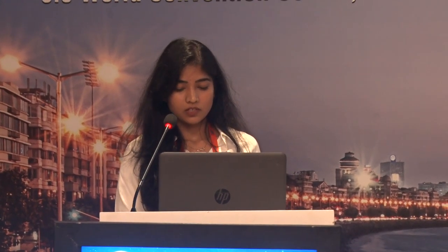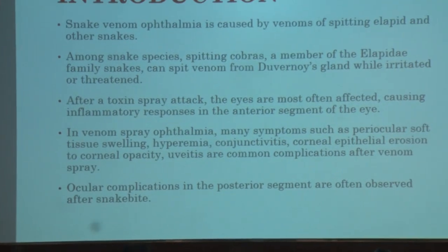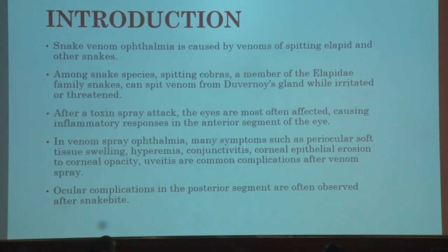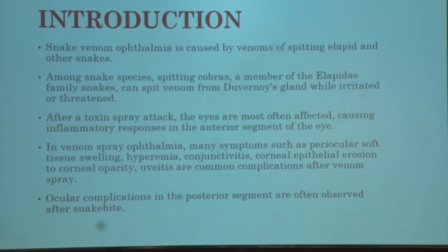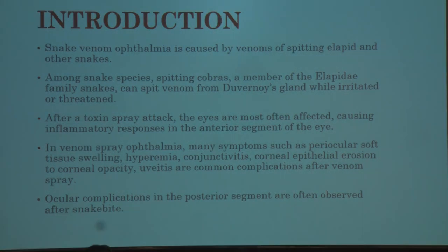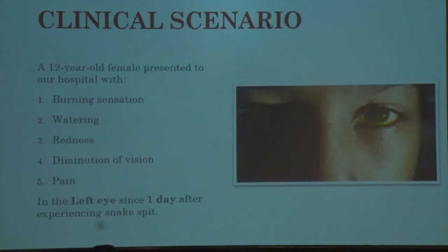Dr. Jagrati Khudania presented a case of snake venom ophthalmic uveitis. Snake venom ophthalmia is caused by venoms of spitting cobras and other elapid family snakes, which can spit venom from the venom gland when irritated, up to 8–12 feet. Ocular inflammation of the anterior segment is the primary result. A 12-year-old female presented with burning sensation, watering, redness, diminution of vision, and pain in the left eye for one day after experiencing a snake spit. BCVA was 6/24 in the left eye. Findings included mild conjunctival congestion, mild corneal haze, fluorescent stain-positive lesions in the pupillary area, dusting KPs on inferior endothelium, aqueous cells and flare 1+, grayish-brown iris with edema, and sluggish pupil.